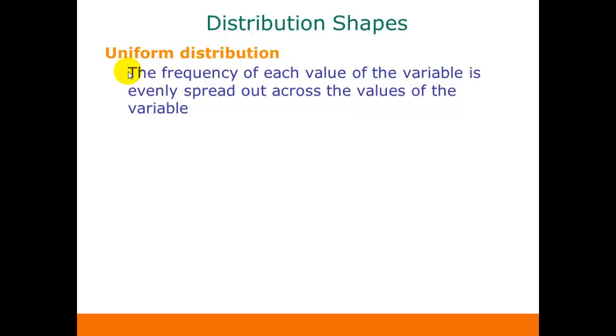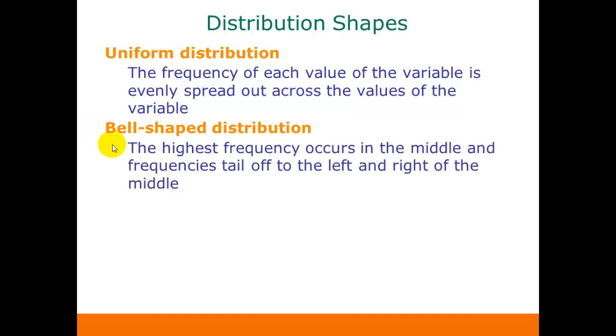If we have a bell-shaped distribution, that means that the highest frequency occurs in the middle of the graph and the frequencies tail off to the left and to the right. And for a bell-shaped distribution, we want it to be approximately symmetric. So if we look at the very middle, where the highest frequency is, we want to have a mirror image on each side of that.